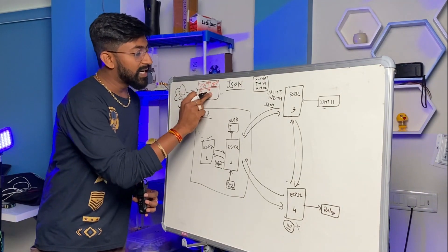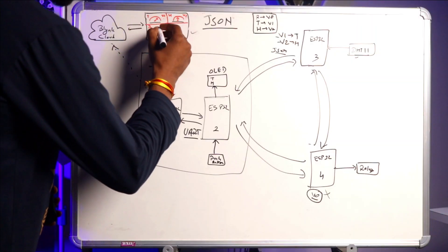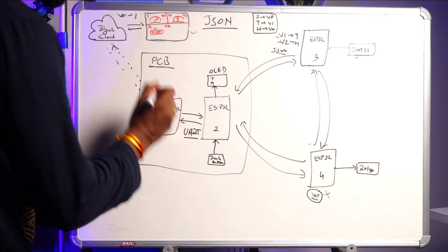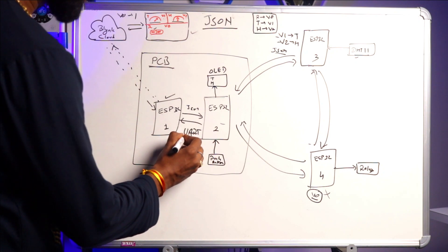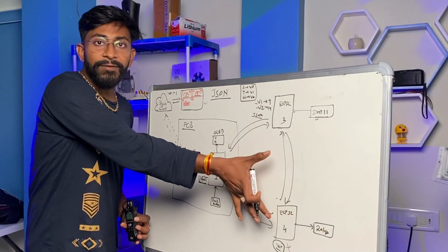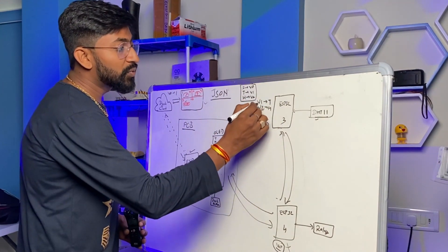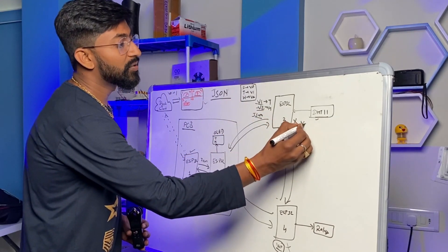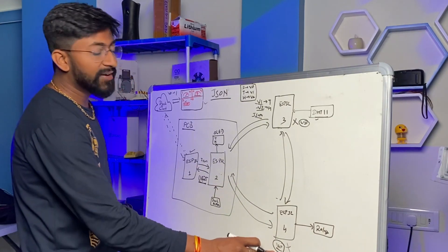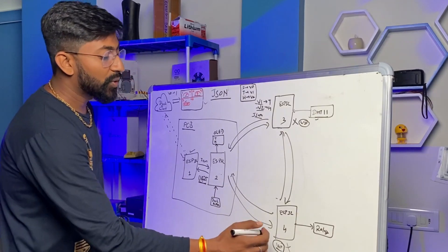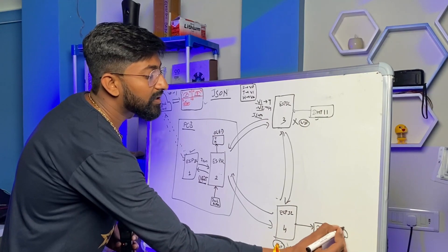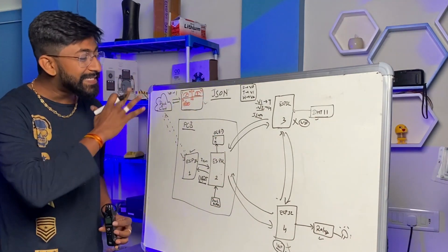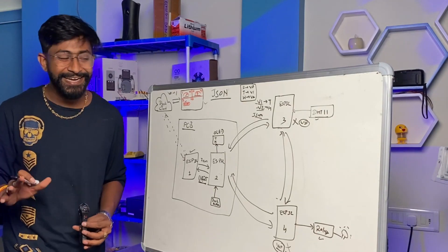Now let's see the reverse — sending data from Blynk Cloud to ESPNOW devices. For example, when you turn on the relay from the Blynk Cloud dashboard, the V0 variable becomes 1. This data is received by ESP32 number 1, which sends it via UART in JSON format to ESP32 number 2. ESP32 number 2 then broadcasts the data via ESPNOW to all devices. ESP32 number 3 reacts only to V1 and V2 variables, so it won't react to V0. But ESP32 number 4 reacts to V0: if the value is 1, it turns on the relay and the connected bulb. This is how we can control appliances from anywhere in the world using the Blynk Cloud platform.